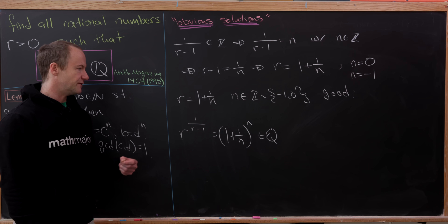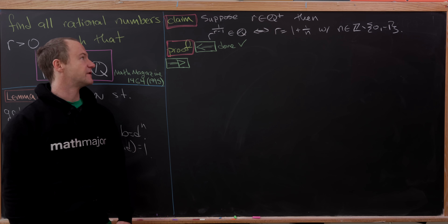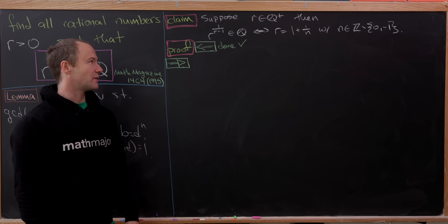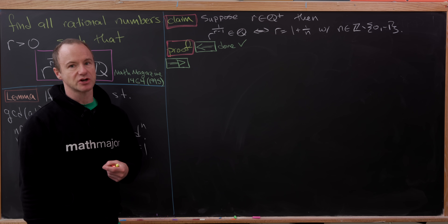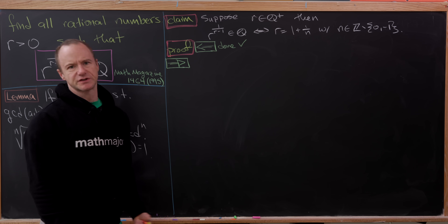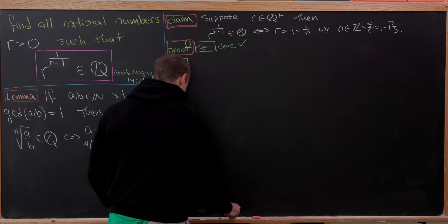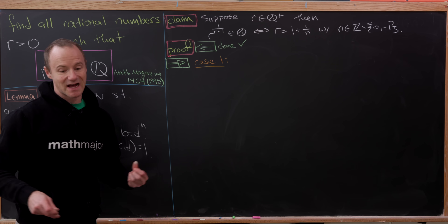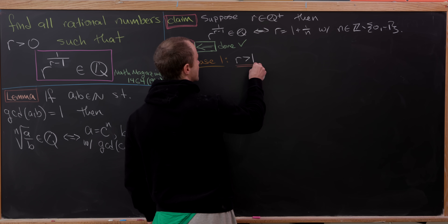We've established the claim: for a positive rational number r, r to the power 1 over r minus 1 is rational if and only if r equals 1 plus 1 over n, where n is an integer excluding 0 and negative 1. We've proved the reverse direction. Now we prove the forward direction by splitting into two cases depending on the size of r. The first case is r greater than 1.